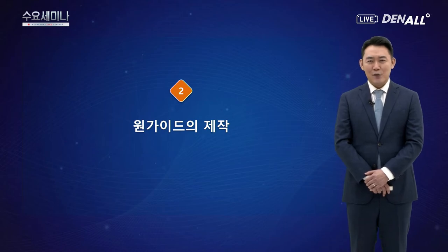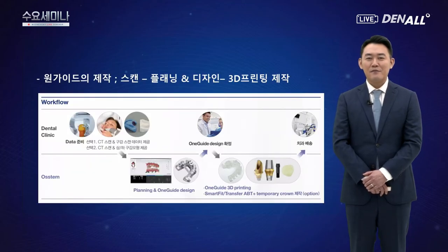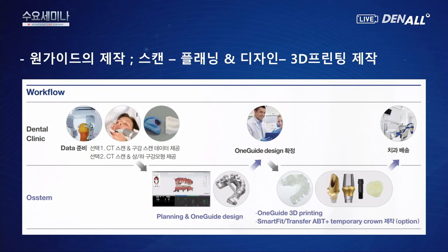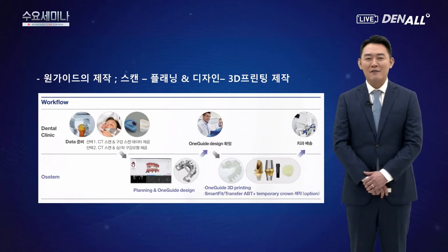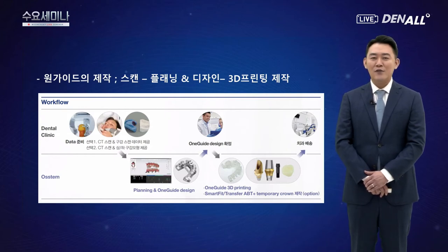이제 원가이드를 어떻게 제작하는지 설명드리겠습니다. 원가이드 제작 워크플로우는, 치과에서 환자 내원 시 CT 촬영을 하고, 구강 스캐너가 있는 경우 스캔을 뜨며, 없는 경우 상하악 인상 채득 후 모델을 제작합니다. 구강 스캐너가 없어도 가이드 수술이 가능하며, 무치악 케이스나 치아가 거의 없는 경우에는 오히려 모델 작업을 추천합니다. 원가이드 홈페이지에서 환자 인적사항과 수술 부위를 입력한 후, 센터에서 수술 플래닝과 가이드 디자인을 하게 됩니다.